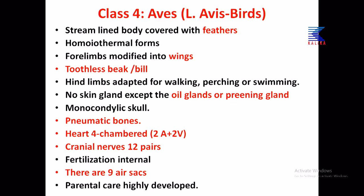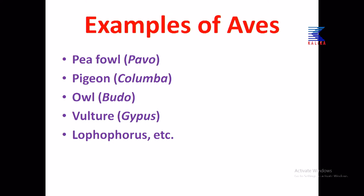Some examples of Aves: Pea fowl (Pavo), Pigeon (Columba), Owl (Bubo), Vulture (Jaipus / Gyps), Dove (Lepoporous / Columba), Dauphine. These are some examples of birds belonging to class Aves.